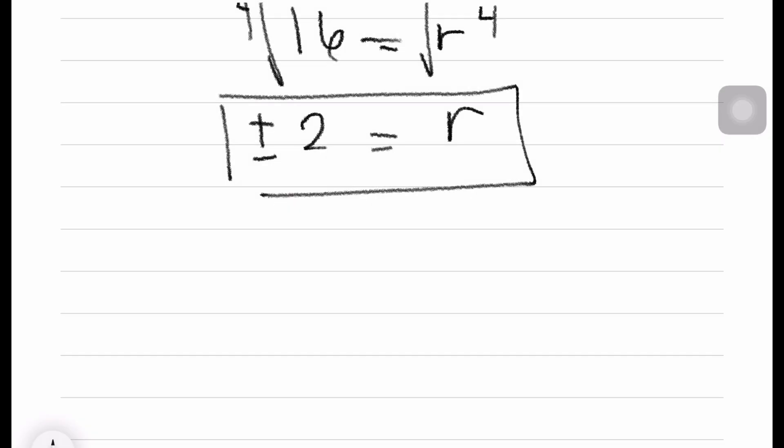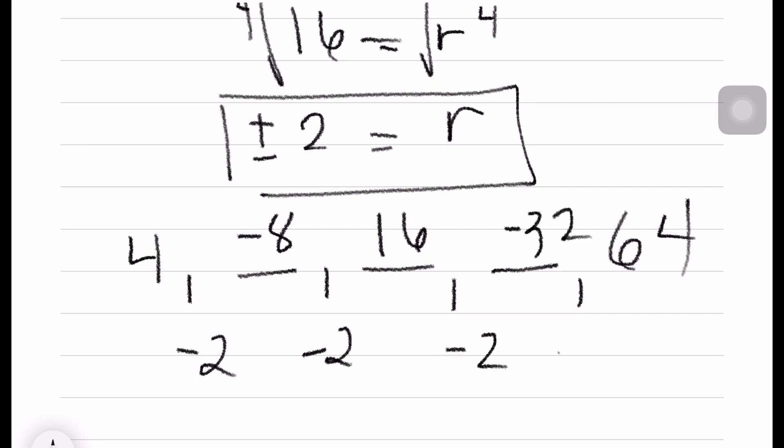And yes, we can also use negative 2 as the common ratio. Say for example, we have 4. 4 times negative 2 is negative 8. Negative 8 times negative 2 is positive 16. 16 times negative 2 is negative 32. And negative 32 times negative 2 is positive 64.